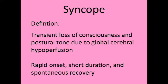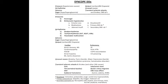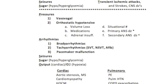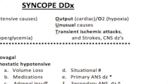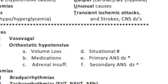Syncope causes someone to faint with rapid onset, short duration, and spontaneous recovery. There will often be a prodrome including vision changes, nausea, weakness, and palpitations. Before we get into the mnemonic, remember that cardiogenic causes should always be at the top of the differential. The mnemonic is PASS OUT: P is for Pressure, A is for Arrhythmia, S is for Seizure, the other S is for hypo- or hyperglycemia, O is for Output (cardiac) and Oxygen (hypoxia), U is for Unusual causes, and T is for Transient Ischemic Attacks, strokes, and CNS diseases.